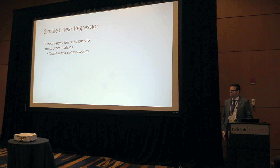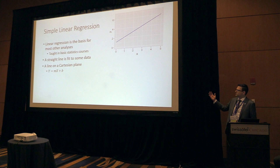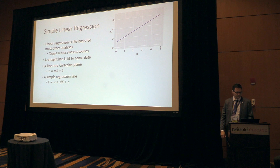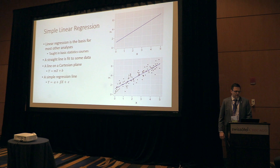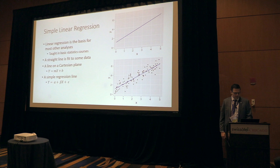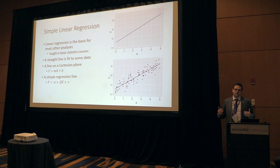Talking about linear regression is really everything from an introductory statistics course — fitting a straight line to some data. We have the classic straight line and a simple regression line with adjusted parameters. I'll use the equation y = a (intercept) + beta*x + error a lot. The error captures the fact that your line doesn't perfectly match your data — there's measurement error and residuals. Note that the intercept parameter is often referred to as beta zero or beta sub zero in the literature.